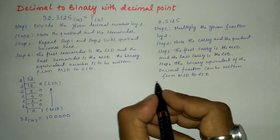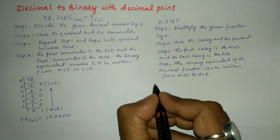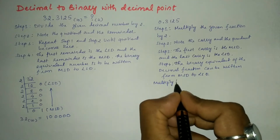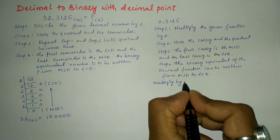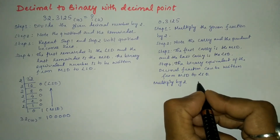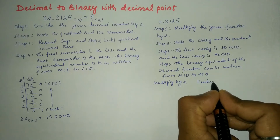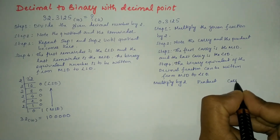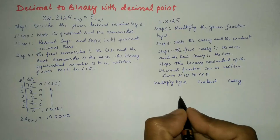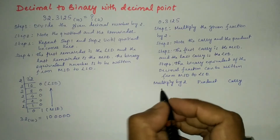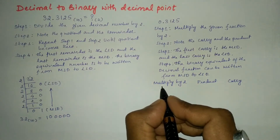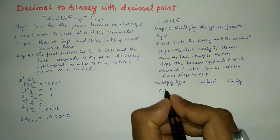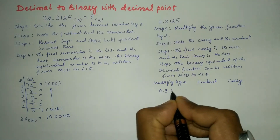Now let us form a table. The first column is 'multiply by 2', the second column is 'product', and the third column is 'carry'. We are going to multiply the given decimal fraction 0.3125.